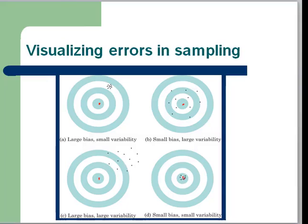So it's a little dot in the middle of each one of these bullseyes. If my sample proportions have large bias and small variability, they're going to look like this.